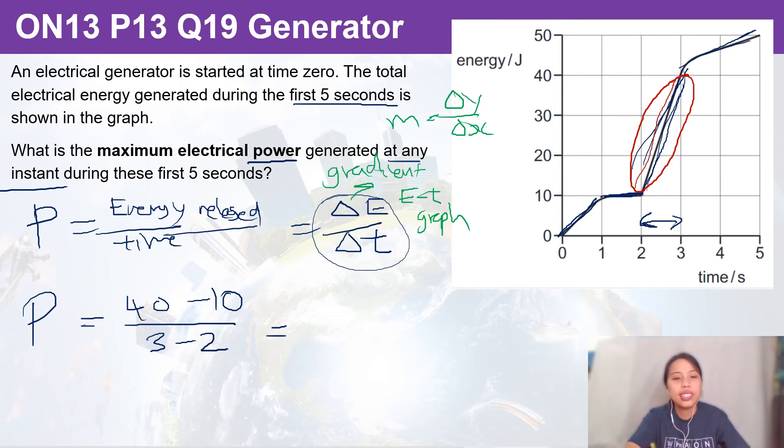So this is basically finding the gradient, which is also the change in time. So what you get is 30 divided by 1, so 30 watts. So here we can say that the maximum power generated is 30 watts, and that occurs somewhere between two to three seconds.